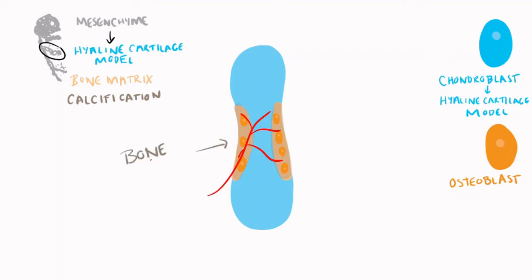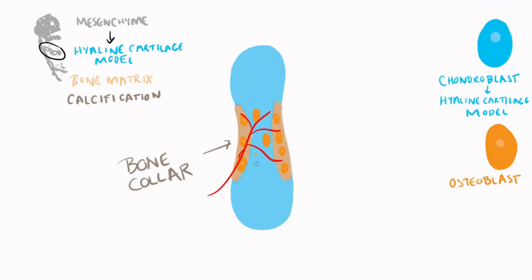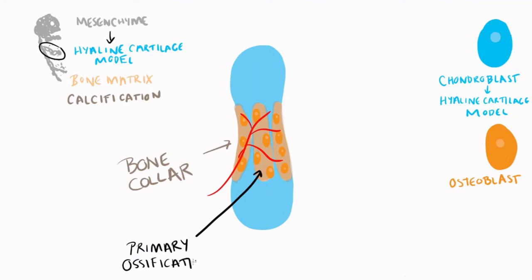This is the process by which the bone collar, or the periosteal collar, is formed at the diaphysis. The formation of the bone collar disrupts diffusion to the cartilage and the chondroblasts in the central part of the bone, leading to their death. Osteoblasts then come in and lay bone in their place at what is called the primary ossification center.